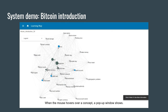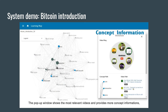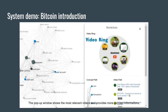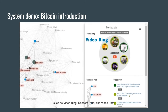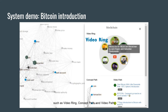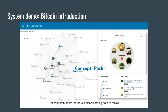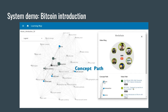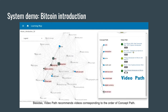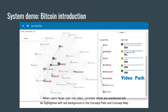Users can also see corresponding videos by clicking on nodes. When they select a concept, a pop-up panel shows up displaying the most relevant videos and more information about the concept. It includes video rings, concept paths, and video paths. Concept Paths provide learners a clear learning path through the concepts, and video paths recommend the videos corresponding to each concept. When users hover over a video, the concepts mentioned in that video are highlighted in the concept map and the path.